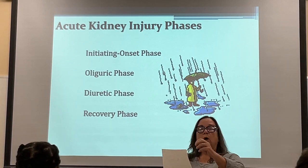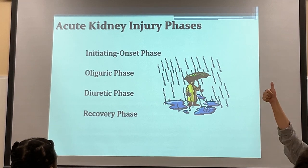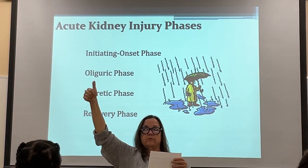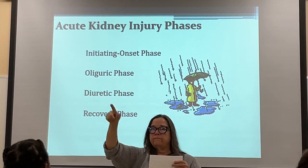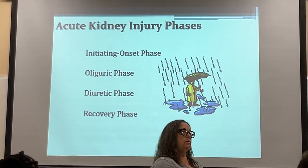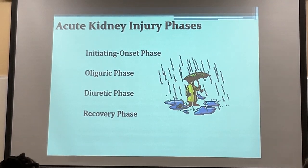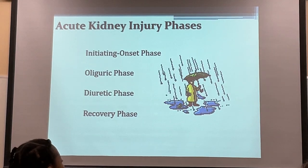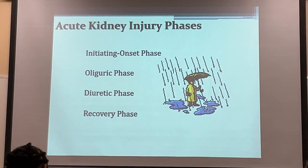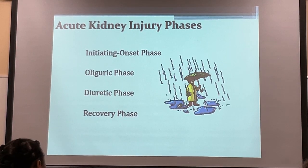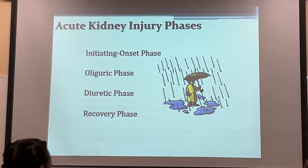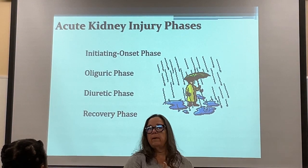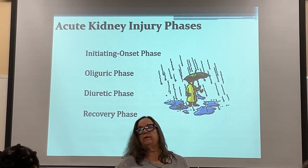In the oliguric phase, you also see protein spilling in the urine. Bicarb will be low because the kidneys produce bicarb — impaired kidneys can't produce it, hence metabolic acidosis. Intake does not match output: if they take in 2,000 mL but only produce 350 mL output, that's oliguria. Pay close attention to I&O, especially in patients with kidney disease.